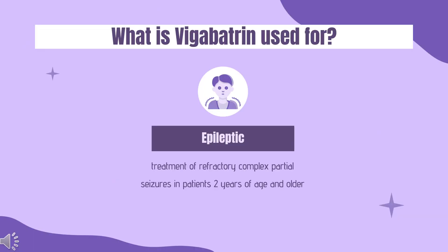Vigabatrin is indicated as adjunctive therapy in the treatment of refractory complex partial seizures in patients 2 years of age and older who have had inadequate responses to multiple previous treatments — i.e., not to be used for first-line therapy. It is also indicated as monotherapy in the treatment of infantile spasms in patients between 1 month and 2 years of age for whom the potential benefits outweigh the risk of vision loss.